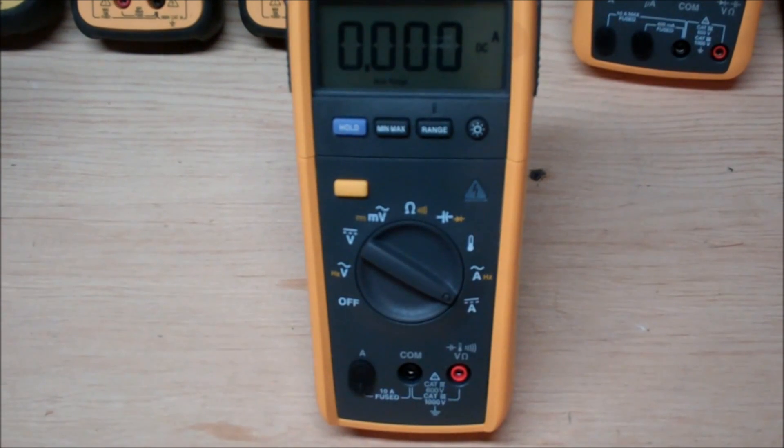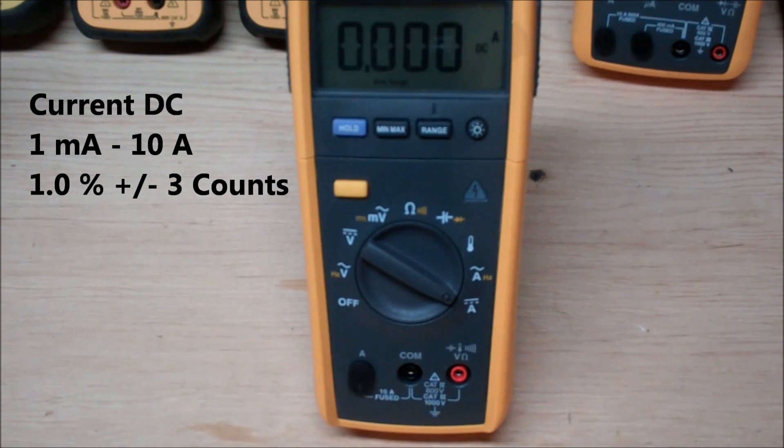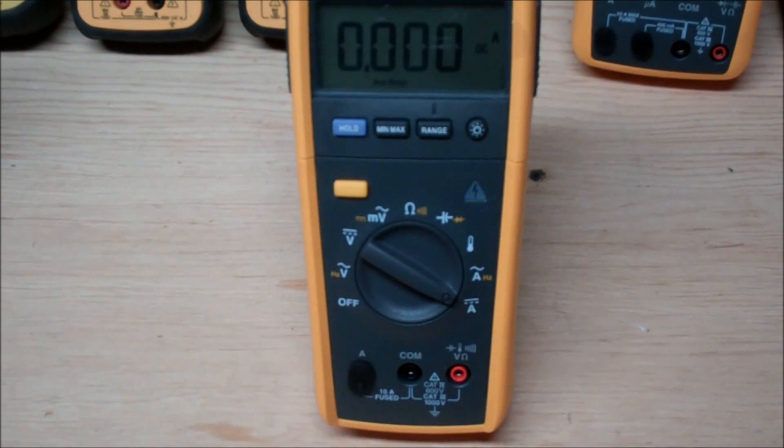Now the final measurement this thing is capable of doing is DC amperage and it's got the exact same range as the AC, from 1 milliamp to 10 amps. And this is going to be really nice because that's going to cover your 4 to 20 milliamp transmitters. So it's got a perfect amount of range for your actual electricians.